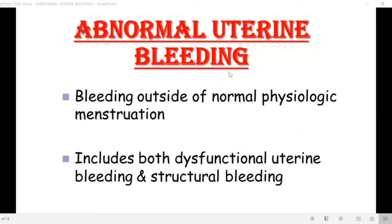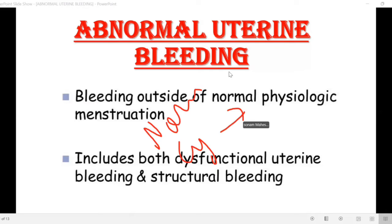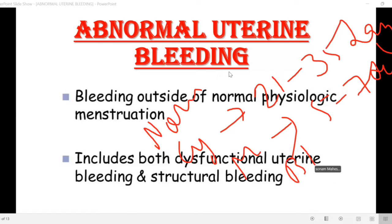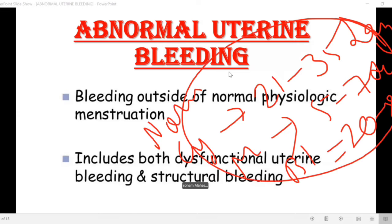Hello everyone. Today's topic is abnormal uterine bleeding. First, let's see what is normal criteria. The cycle interval is 21 to 35 days. Menstrual flow lasts 5 to 7 days. Blood loss is 20 to 80 ml. If there is more blood loss than this criteria, then we will consider that an abnormal condition.